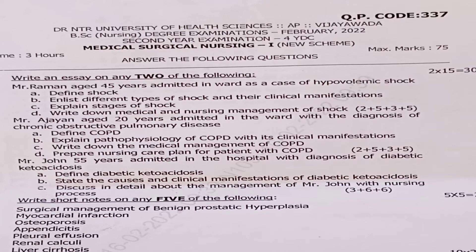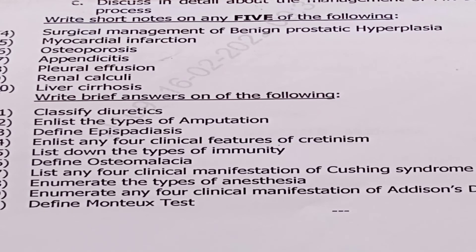Question 3: Mr. John, 55 years, admitted with diagnosis of diabetic ketoacidosis. Question 3a: define diabetic ketoacidosis — 3 marks. Question 3b: state the causes and clinical manifestations of diabetic ketoacidosis — 6 marks. Question 3c: discuss in detail the management of Mr. John using nursing process — 6 marks.